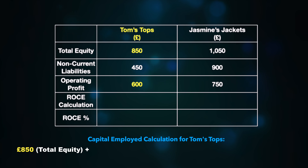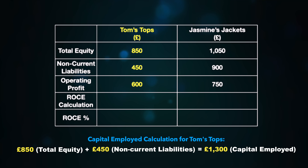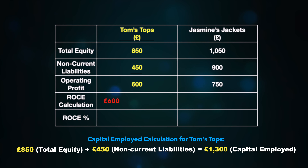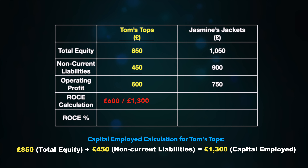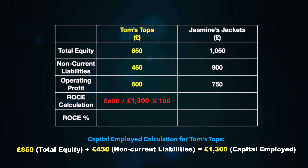On your screen now you have some key information about two businesses. This includes their total equity, any non-current liabilities, and their operating profit. You've got Tom's Tops on the left and his rival Jasmine's Jackets on the right. Based on this information, calculate the return on capital employed for both businesses and evaluate what this means. You can pause your screen now and have an attempt on your own, or just wait and follow me as I work through the example.